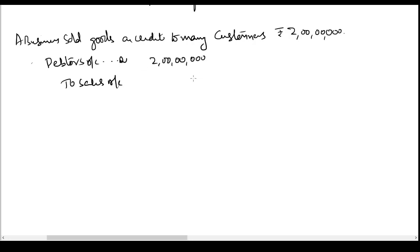The people who have to pay money to us are shown as debtors in our books. We treat them as personal accounts — people who have taken goods from the business. These people owe money to the business, and since the goods have been sold, their income has been recognized at 2 crore rupees. This is how we record an entry for credit sales.